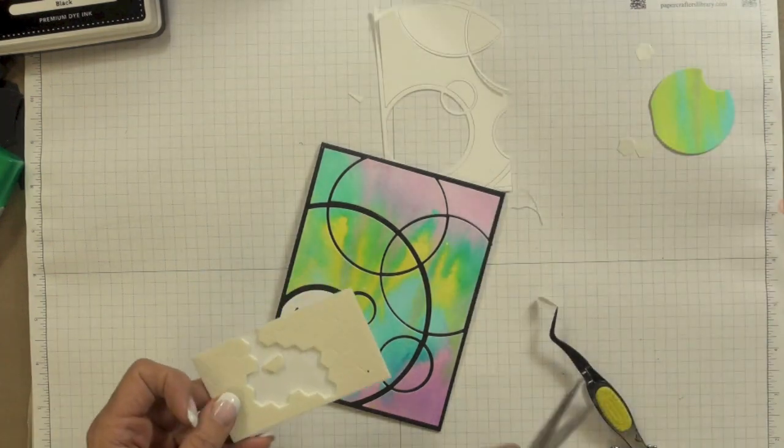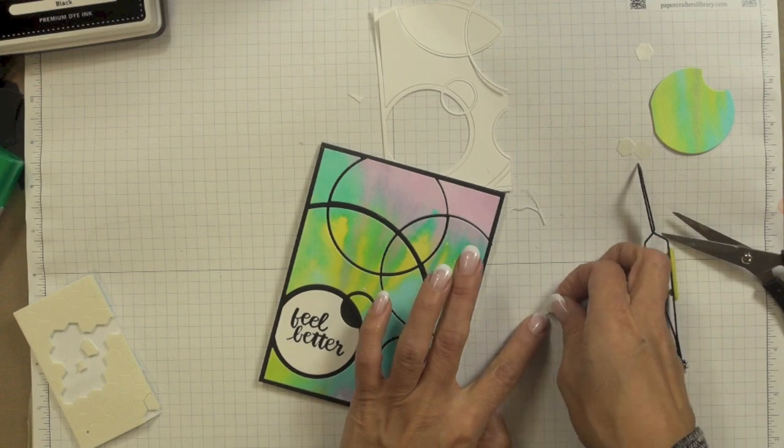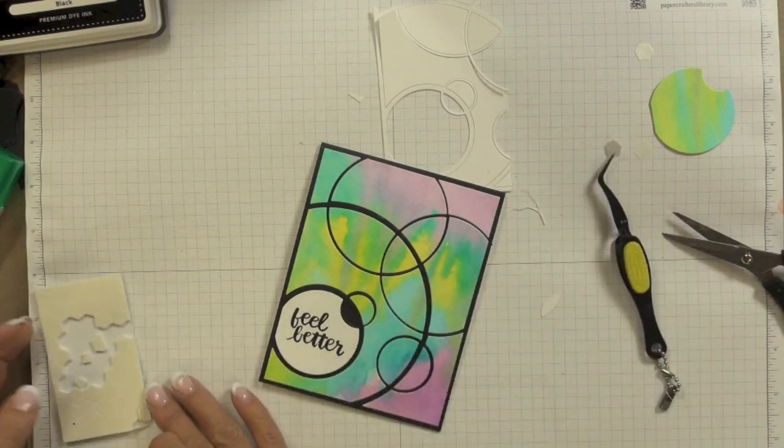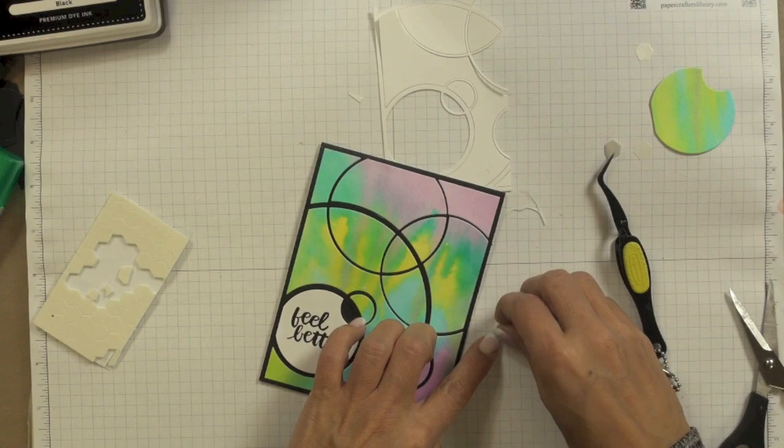I then carefully removed that piece and applied some dimensional foam adhesive to the back of both the larger circular piece with the sentiment and that smaller circular fragment so that I could pop them up from the surface of the card and just give it more dimension.